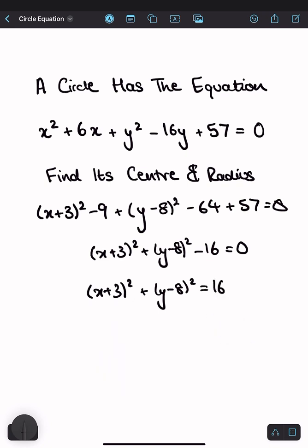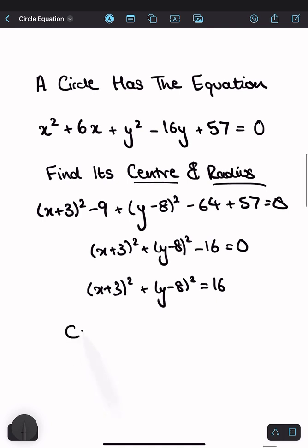And we are now familiar with this form and we can find the center and radius of the circle. So the center of the circle occurs at minus 3, 8 because you just read these values off and change the sign.